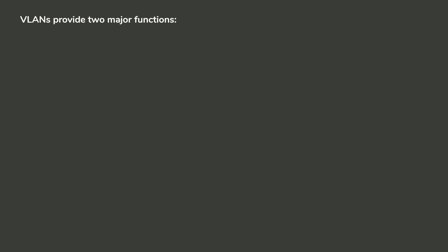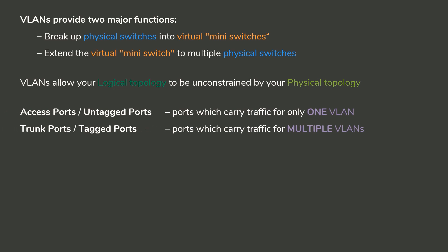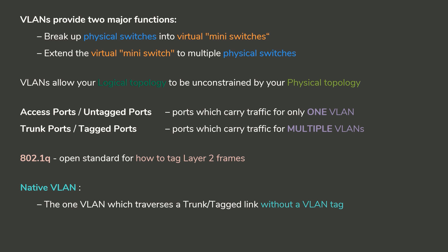To summarize everything we've learned: VLANs provide two major functions. One, they break up physical switches into virtual mini-switches. And two, they extend those virtual mini-switches across multiple physical switches. This allows your logical topology to be unconstrained by your physical topology. We learned that access ports, or untagged ports, are ports which carry traffic for only one VLAN. And we learned that trunk ports, or tagged ports, are ports which carry traffic for multiple VLANs. We learned that the standard for tagging traffic is known as the 802.1Q standard. And we learned that the native VLAN is the one VLAN which is allowed to traverse a trunk or tagged link without a VLAN tag.